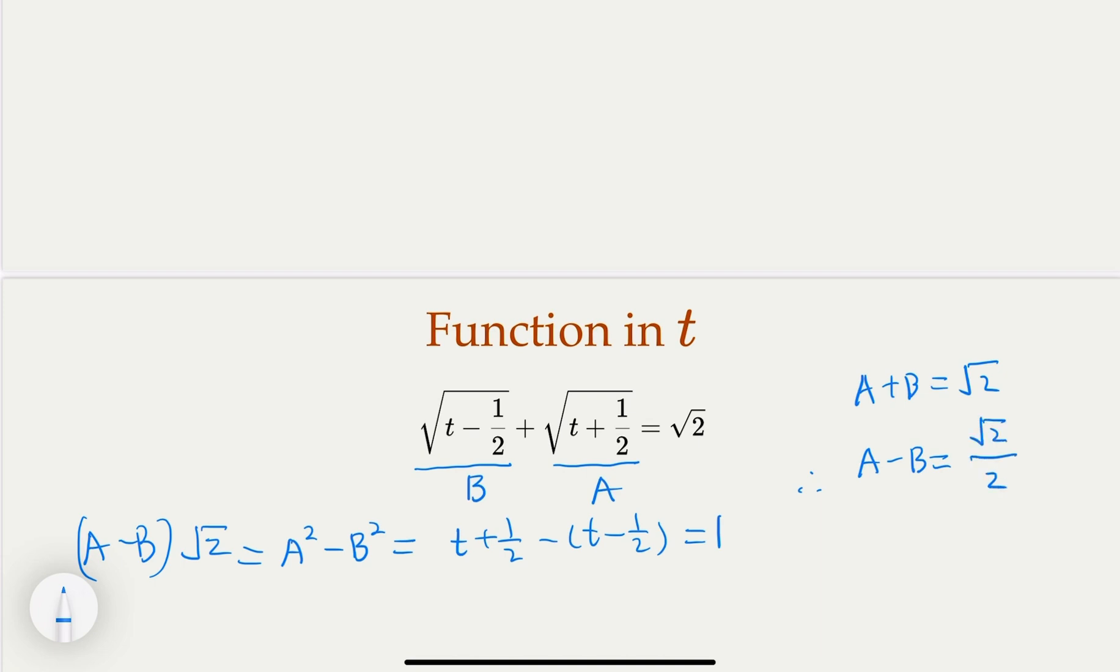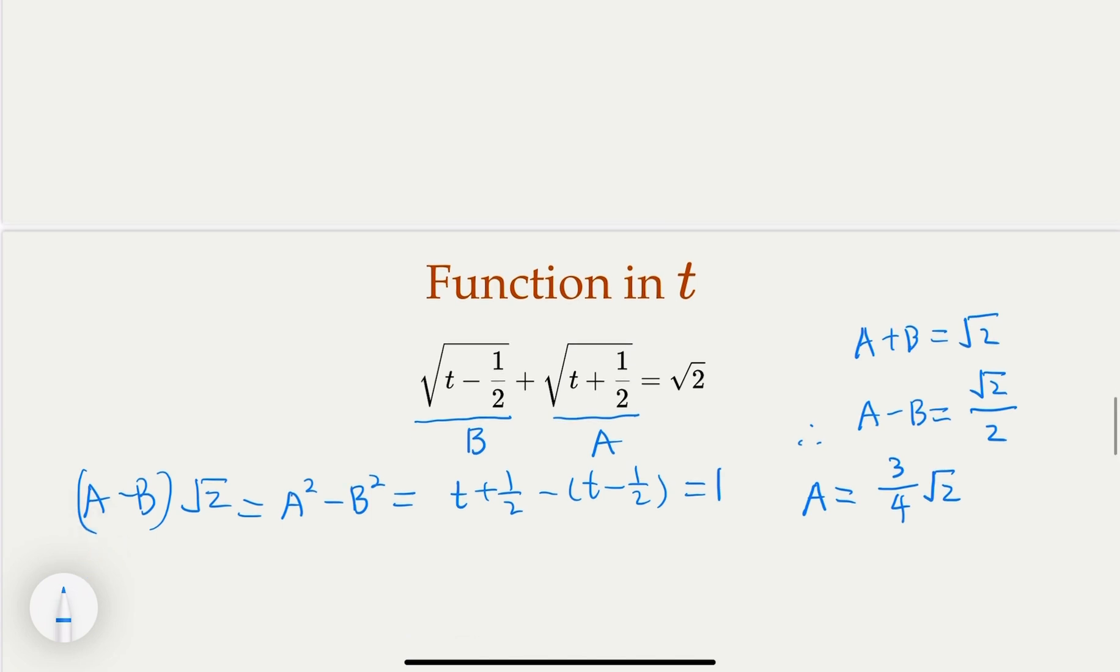Alright, a + b minus b now. So a would equal to sum up and divided by 2, that would be 3 quarter of √2. So what is t here? t would equal, yeah, a² - 1/2 because by definition, a equals this. If it's squared, you're going to get that. So here, let's do that. A²,